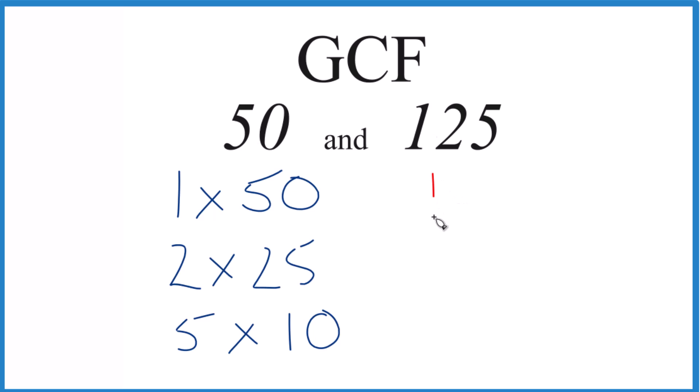For 125: 1 times 125, 5 times 25, and that's it.